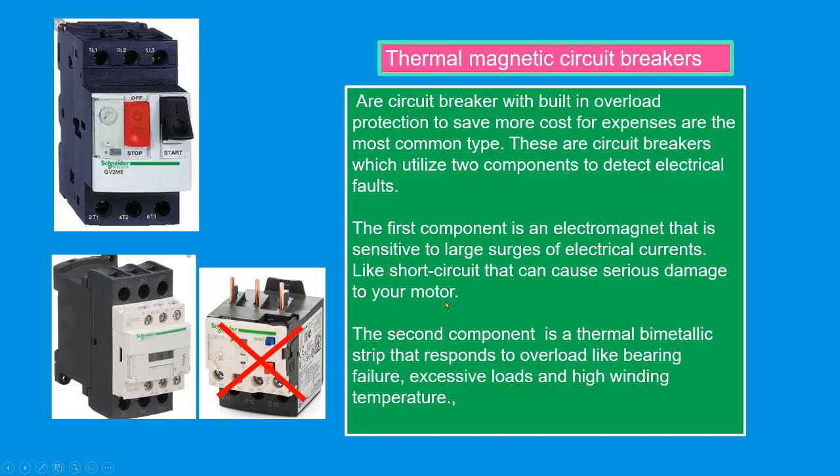Next, thermal magnetic circuit breaker. Our circuit breaker has built-in overload protection to save motor costs and is the most common type. These circuit breakers utilize two components to detect electrical faults. The first component is an electromagnet that's sensitive to large surges of electrical current, like short circuits, that can cause serious damage to your motor. The second component is the thermal bimetallic strip that responds to overload, like bearing failure, excessive load, and high winding temperature.